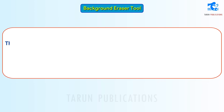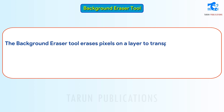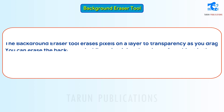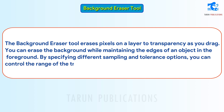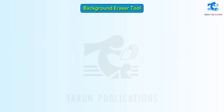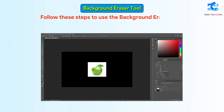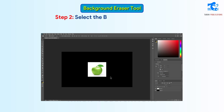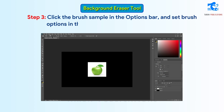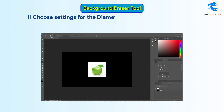Background Eraser Tool. The Background Eraser Tool erases pixels on a layer to transparency as you drag. You can erase the background while maintaining the edges of an object in the foreground. By specifying different sampling and tolerance options, you can control the range of the transparency and the sharpness of the boundaries. Follow these steps to use the Background Eraser Tool. Step 1: In the Layers panel, select the layer containing the areas you want to erase. Step 2: Select the Background Eraser Tool. Step 3: Click the Brush Sample in the Options bar and set brush options — diameter, hardness, spacing, angle and roundness.